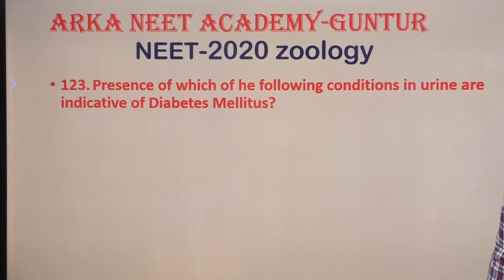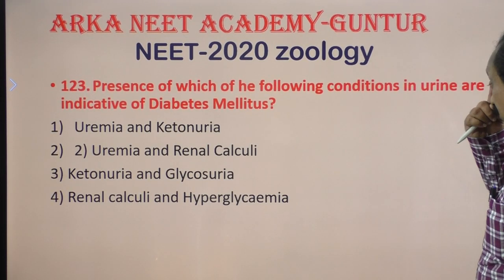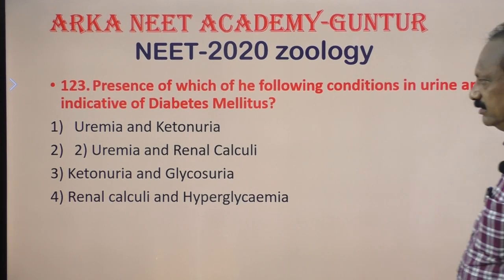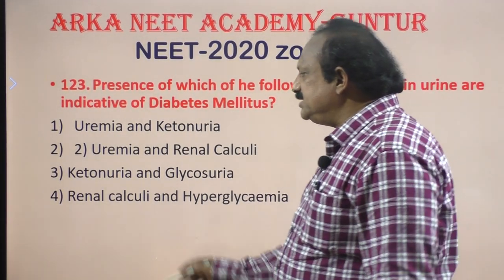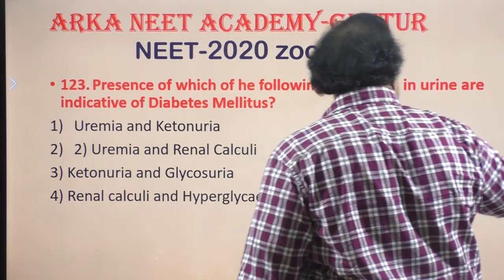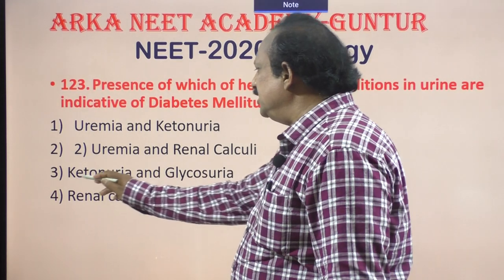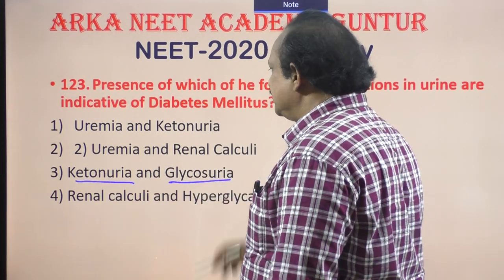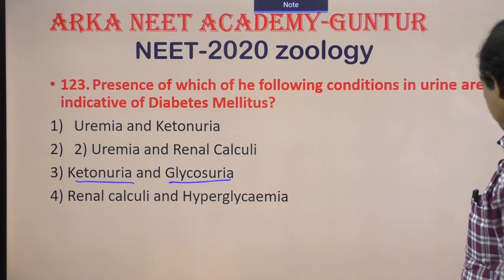The presence of each of the following conditions in the urine is indicative of diabetes mellitus. During diabetes mellitus, ketone bodies are present in the urine, and sugar is also present in the urine. So ketonuria and glycosuria is the correct option.